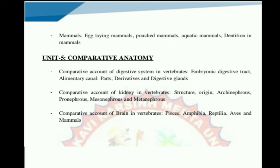Now we are going to discuss the last unit of this paper. This unit's name is Comparative Anatomy. In this unit, we discuss three main organ systems comparatively: digestive organs, kidney, and brain. We discuss the comparative account of the digestive system in vertebrates across different classes: fishes, amphibia, reptiles, aves, and mammals. Topics include embryonic digestive tract, alimentary canal parts like mouth, esophagus, pharynx, stomach, small intestine, large intestine and anus, and digestive glands like liver, pancreas, and salivary glands.